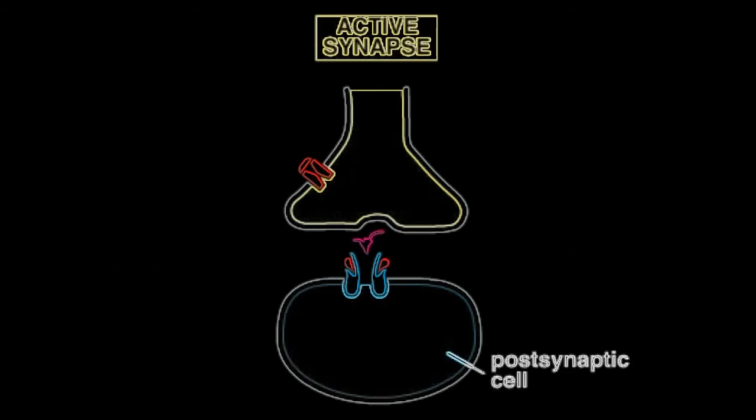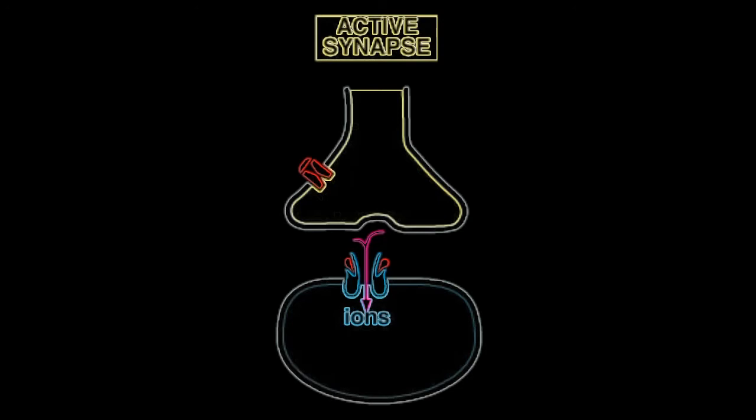The resulting ion flows depolarize the plasma membrane of the postsynaptic cell, thereby converting the neurotransmitter's chemical signal back into an electrical one that can be propagated as a new action potential.